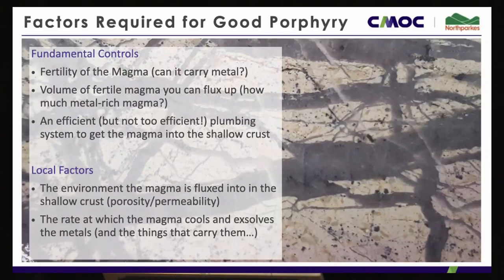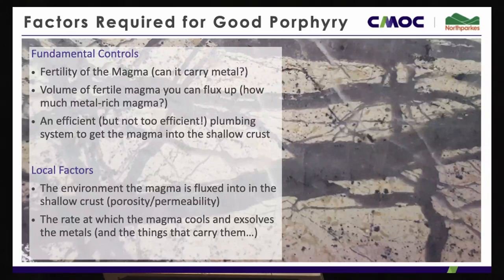Coming back to the source-fluid-trap model: you need a fertile magma, a significant enough volume fluxed into the shallow crustal environment to make a metal budget worth caring about, and a plumbing system to get it there and stall it at the right spot. At a local level, beyond those fundamental controls, what matters is the environment you're fluxing into — the primary porosity and permeability, and the heat of the environment you're emplacing into.